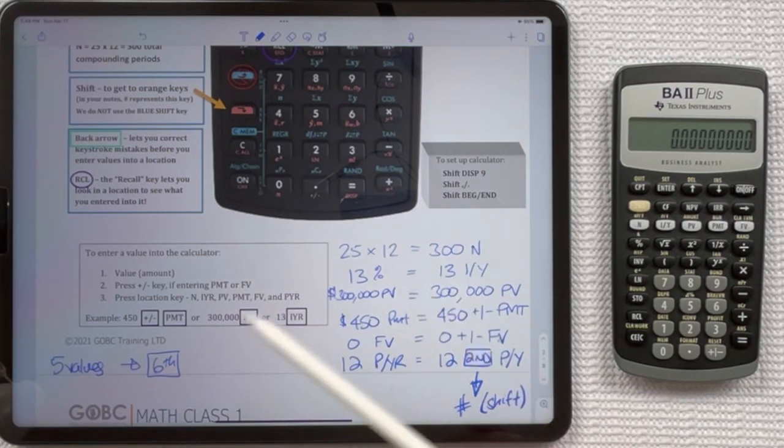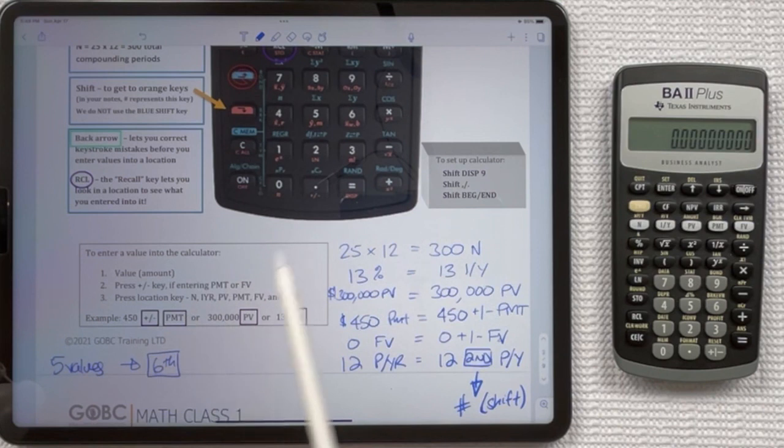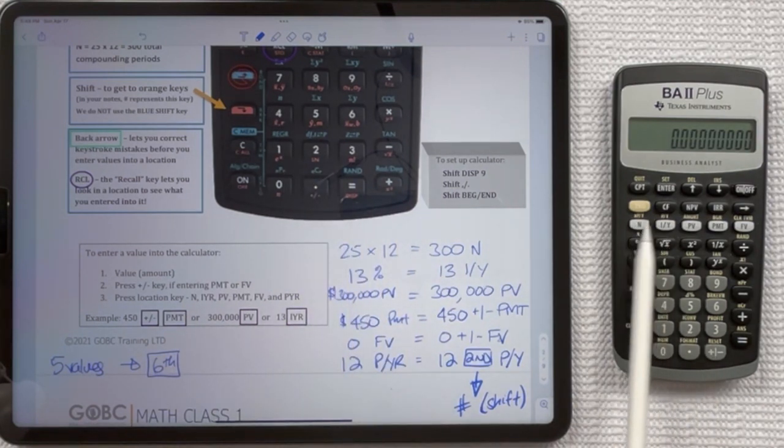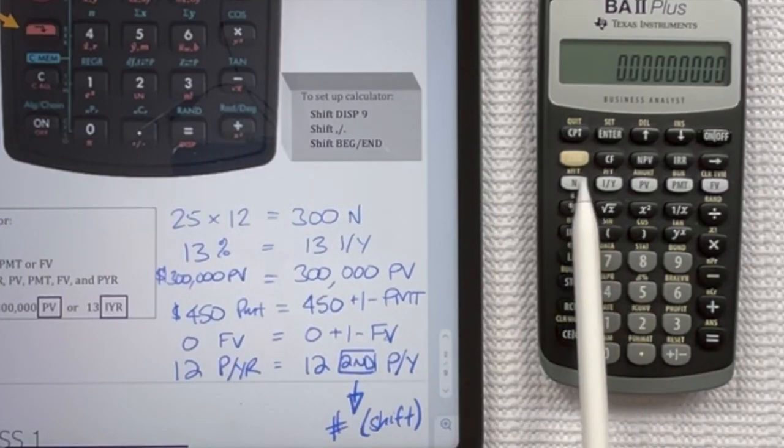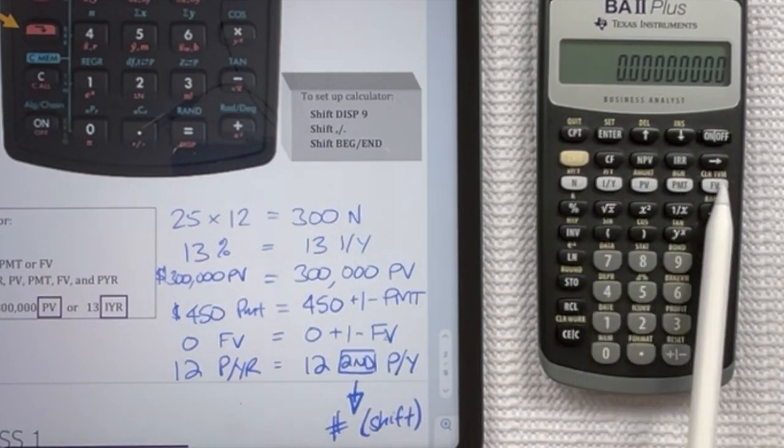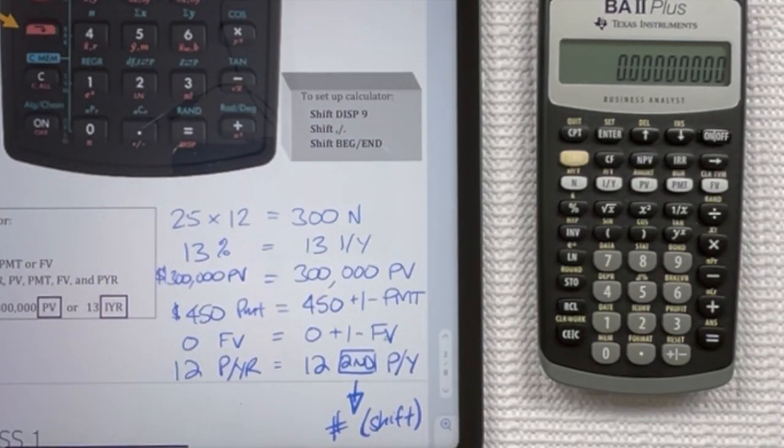For this one here, we said for the HP, you always put the value into the calculator first, then you use the plus minus key if you need to, which is here on the calculator instead of it being up in this area on the HP calculator. It's down here. And then your location keys are here in white, and the PY is actually above your IY key on this calculator. Slightly different configuration and locations, but nothing too crazy that you can't handle.